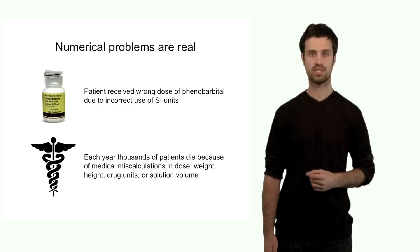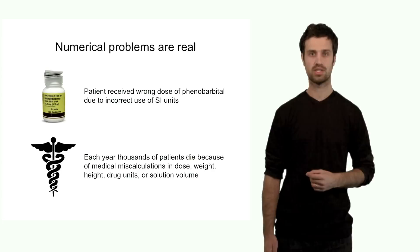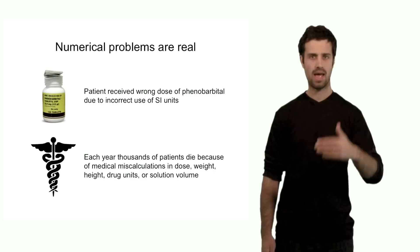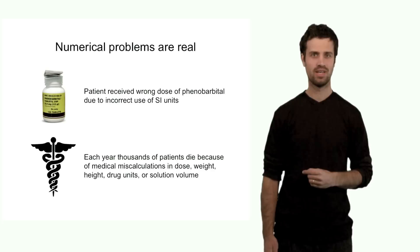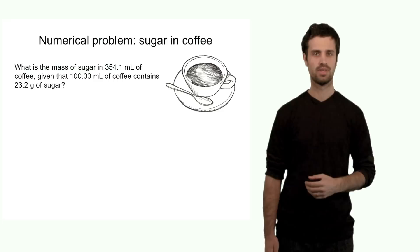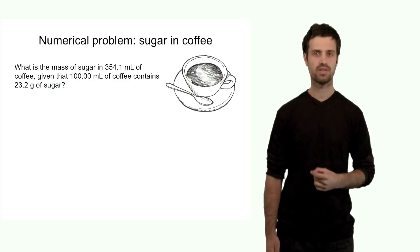So doing these calculations correctly is important, and in doing these calculations correctly, we have to look particularly at the units that we're using. Let me go through a couple of examples and show you how you can keep track of your calculation in such a way that you're sure your calculation is on the right track. The first example involves a very mundane example, which is simply sugar in your coffee.